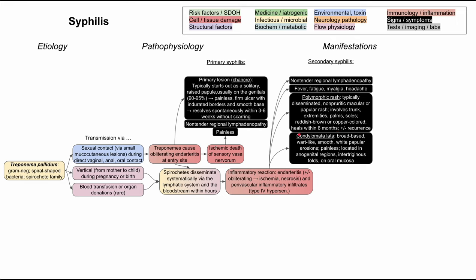The second characteristic symptom of secondary syphilis is condylomata lata. These are broad-based, wart-like, smooth, white papular erosions. They tend to be painless and they're located in anogenital regions, intertriginous folds, or on oral mucosa. Remember the characteristic syphilis rash and the condylomata lata — those are the secondary syphilis characteristics. It's also worth noting that syphilis is most contagious in stage one or stage two, during primary or secondary syphilis.